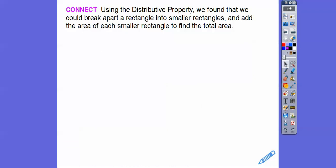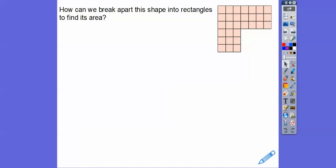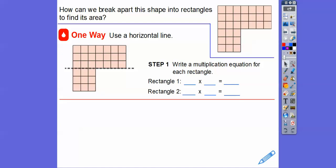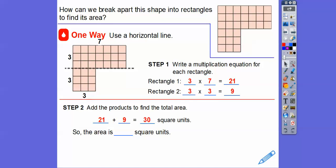So using the distributive property, we found that we could break apart rectangles into smaller rectangles and add the area of each smaller rectangle to find the total area. So you're going to see a figure that looks not a rectangle right here. So how can we break this shape up into smaller rectangles? There's a couple of correct ways to do this. There's others, but the two most prominent are this one right here. We can draw that horizontal line right there, and when we draw the horizontal line, there's two rectangles right here. We've got a top rectangle, which is 3 by 1, 2, 3, 4, 5, 6, 7. So 3 times 7 gets us 21 right there. And then the bottom rectangle is 3 by 3. So 3 times 3 is going to give us 9. So if we add those together right there, so 21 plus 9 gets us 30, so the area of that entire figure is going to be 30 square units.